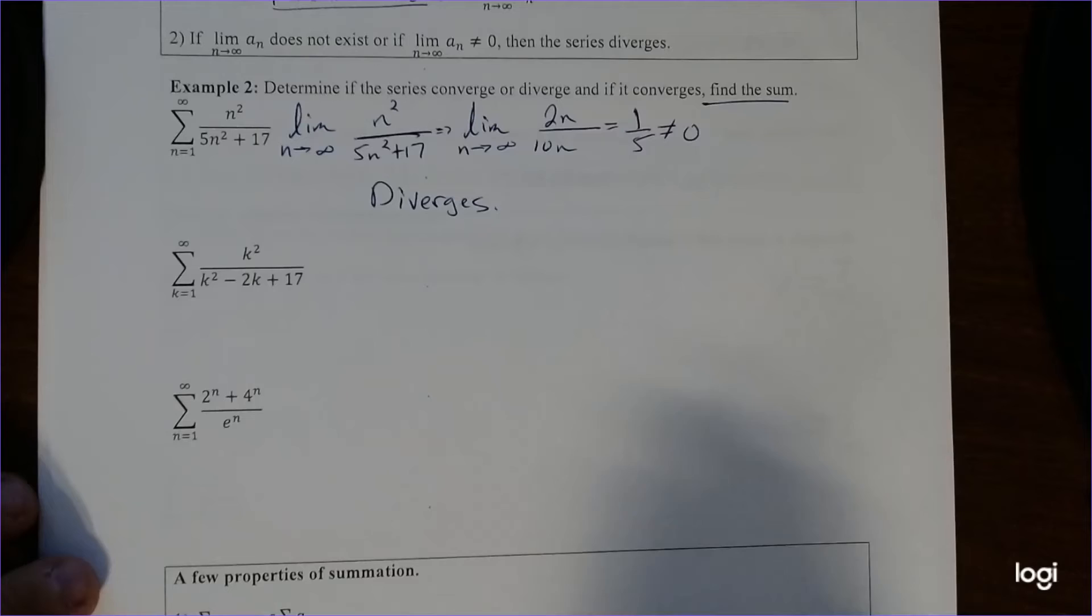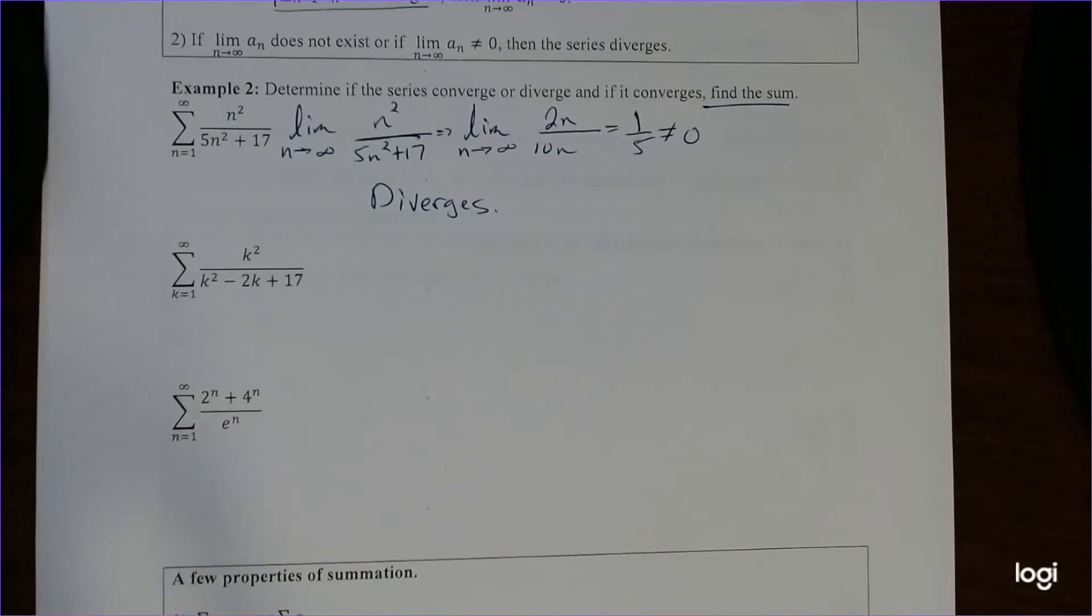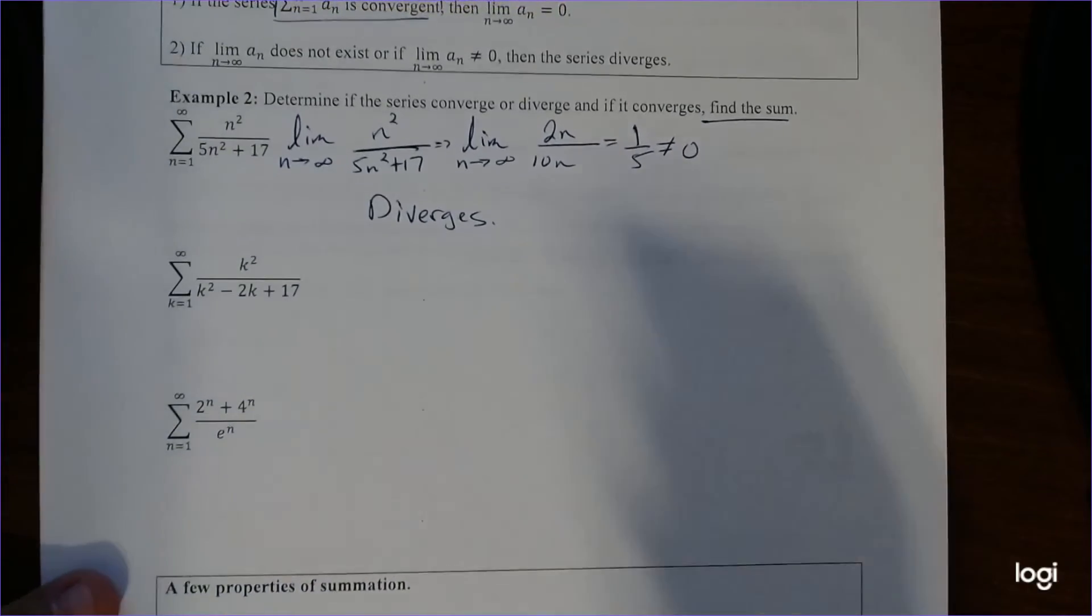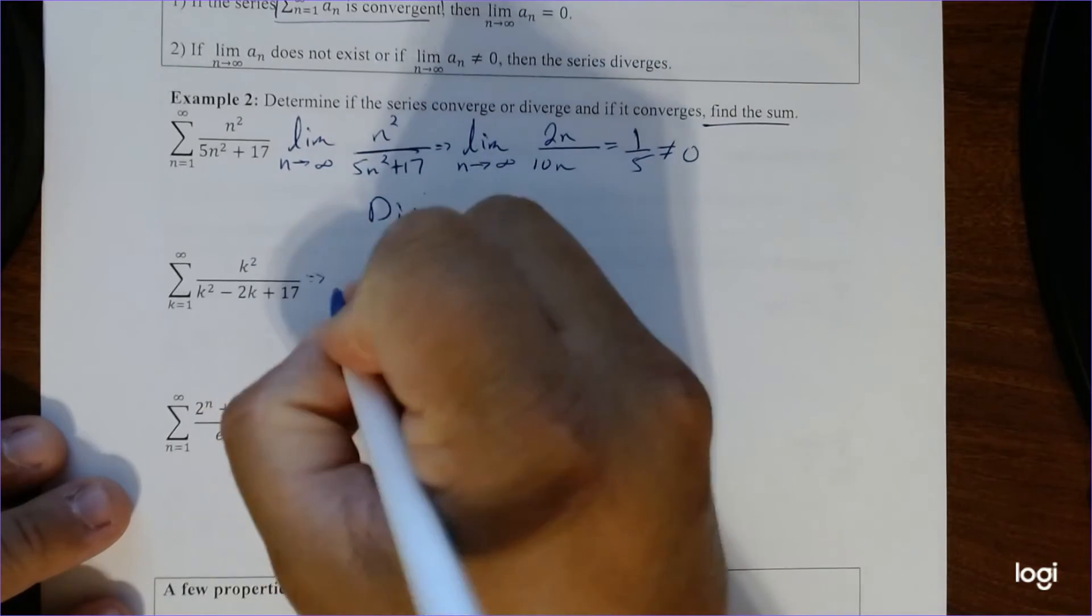All right, so let's do the same thing on part, let's say part B down here. So let's try the next one. So now it's the same process, right? So again, we're just going to take the limit and see.